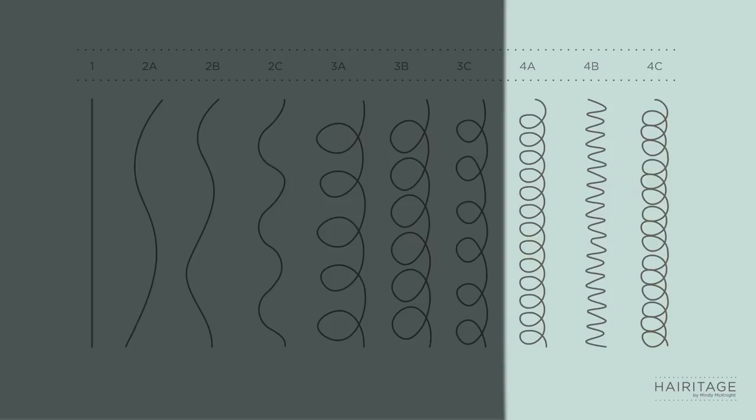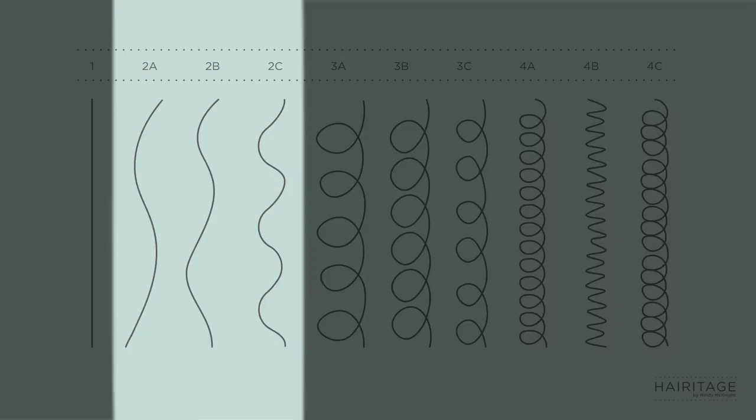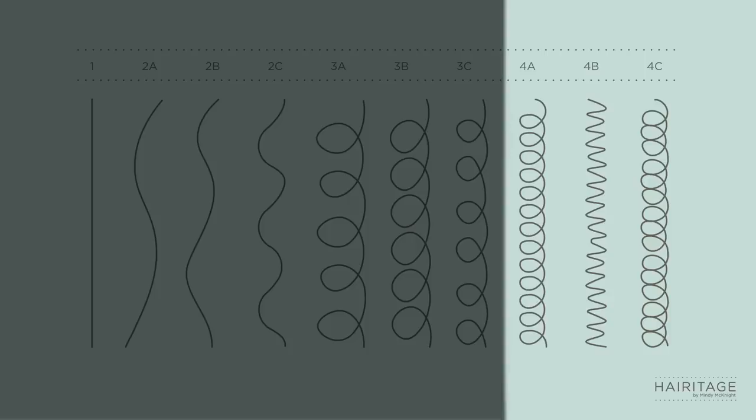Under each of those categories there are subcategories: type 1a, 1b, and 1c — mostly about whether your hair is thin, medium, or coarse. Under type two there's 2a, 2b, and 2c, under three there's 3a, 3b, 3c, and under four there's 4a, 4b, and 4c. What determines the difference between 2a and 2c is typically the width of the curl — how loose or tight it is. A 2a may be almost virtually straight with just a slight bend, where a 2c has more of an S-curve shape. Type threes typically have corkscrew curls, ranging from loose to tighter corkscrews.